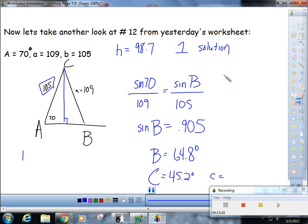And little c, we would do sine of 70 is to 109, like sine of 45.2 is to little c. Cross multiply and divide: 109 times the sine of 45.2 divided by the sine of 70, and you get little c would be 82.3. Now I'm checking to make sure my smallest side is across from my smallest angle. That is true. Is my biggest side across from my biggest angle? Yes, it is. And that is the best I can get you at an introduction into one of the trickiest triangular topics that there is, and that is the ambiguous case of the law of sines.